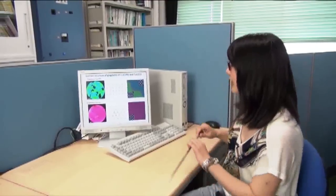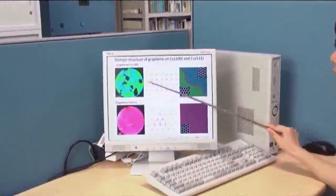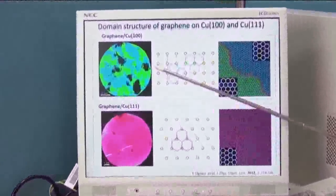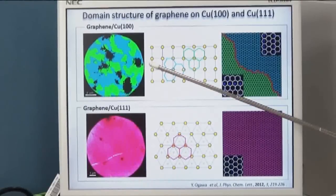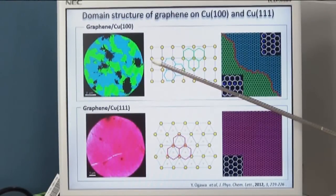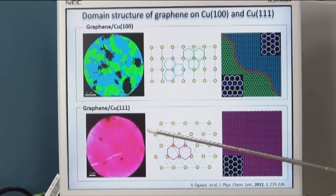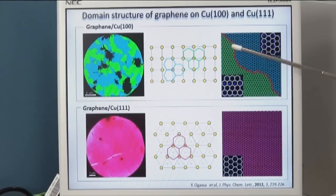From the LEEM image, there are two main orientations, blue and green areas of graphene grown on copper-100. They are rotated 30 degrees. On the other hand, graphene on copper-111 shows uniform orientations. What is really important is how to match the symmetry between copper and graphene as shown in these models.